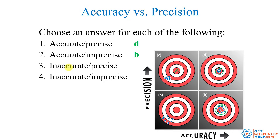Which target shows data that is not accurate but is precise — very consistent, but consistently wrong? That looks like C, because the data is all clustered and very close together, very consistent and precise, but it's off target, so it's not accurate. And neither accurate nor precise — inaccurate and imprecise? That must be A, because the shots are all spread out and not on the target.